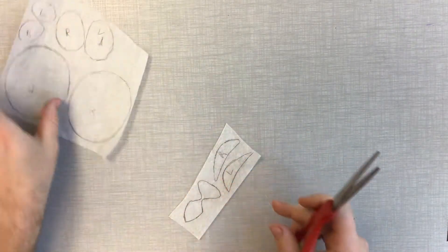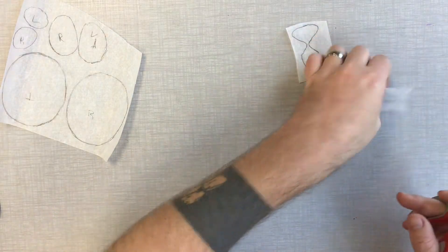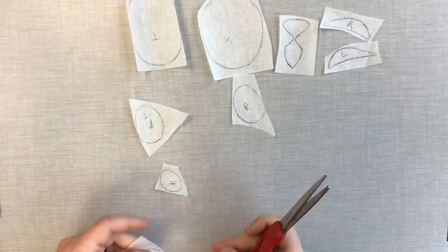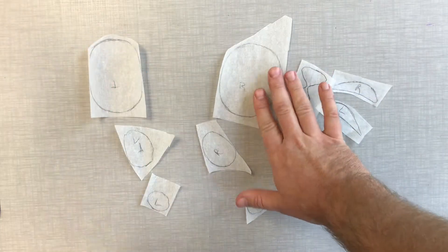When you cut these out, don't cut them to the image itself. You want to cut them out a little bit bigger. Because you need to give yourself some leeway. If you cut all the way to the edge, something bad is going to happen.